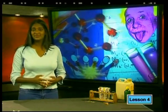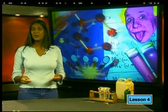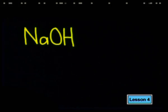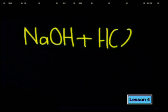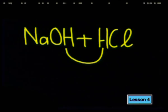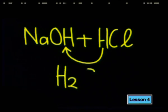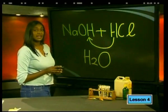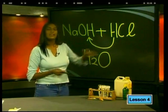Now we have shown that one of the products is water, but what about any other products? Let's take a look at the chemical equation to see if this will give us a clue. We have sodium hydroxide with formula NaOH, and we added hydrochloric acid with formula HCl. The hydrochloric acid donates the hydrogen ion to the sodium hydroxide; the hydroxide ion accepts the hydrogen ion and water is formed. We are left with sodium ions and chloride ions, which stay dissolved in the water.